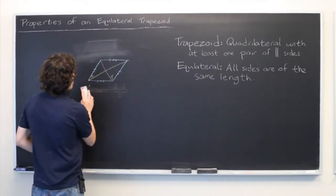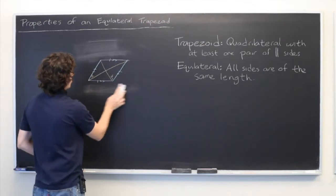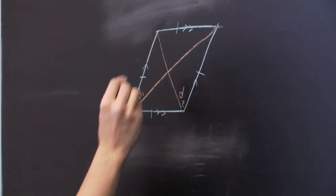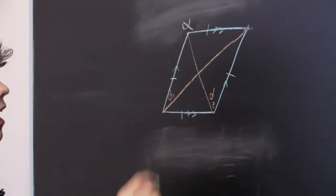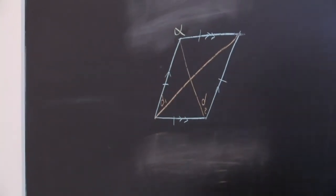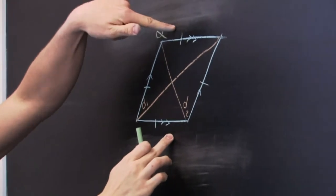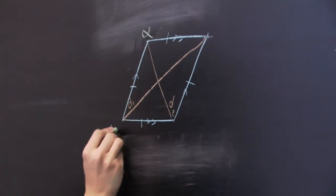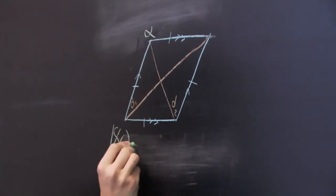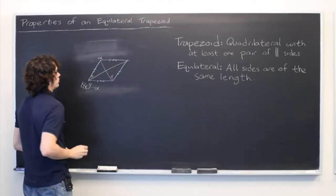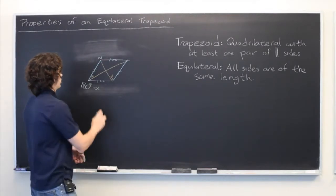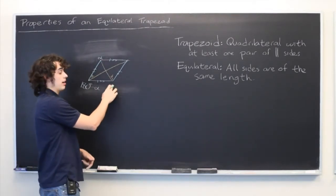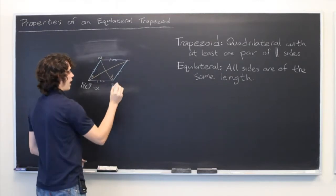Next, we'll talk about some of the relationships that the interior angles have. Let's call this angle alpha. Because these two lines are parallel, this line forms a transversal. And by similar logic, this angle will be 180 minus alpha, or alpha again.